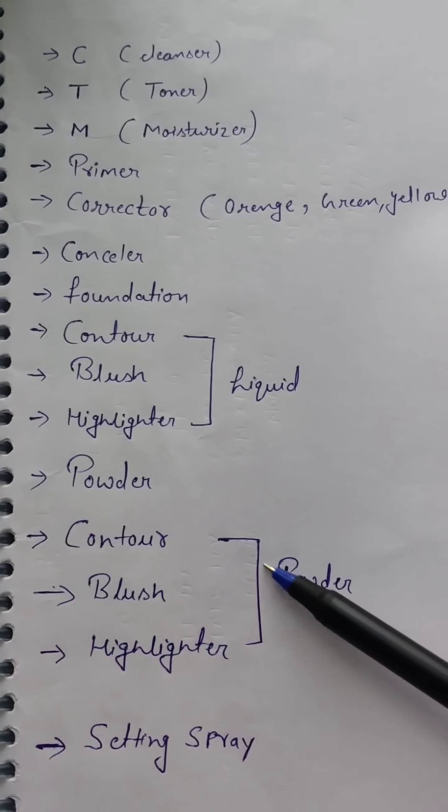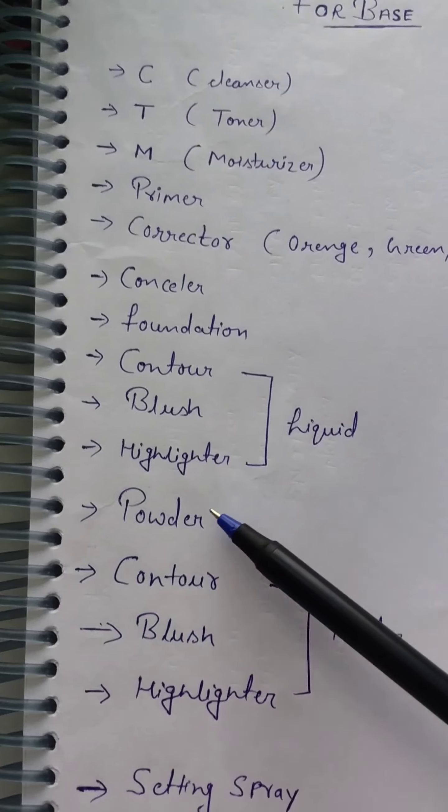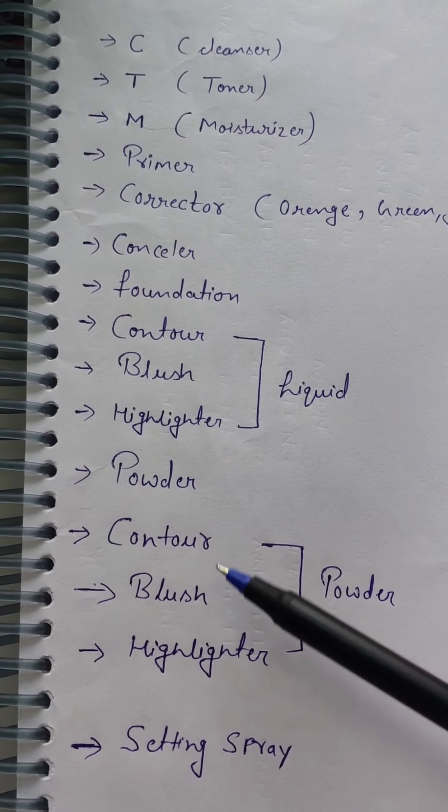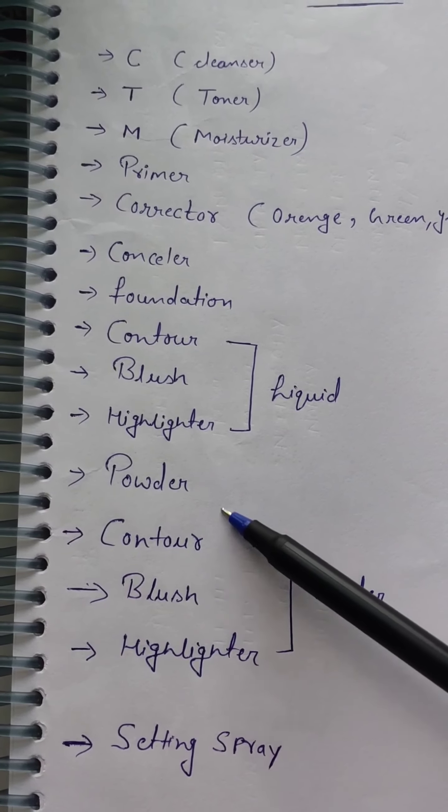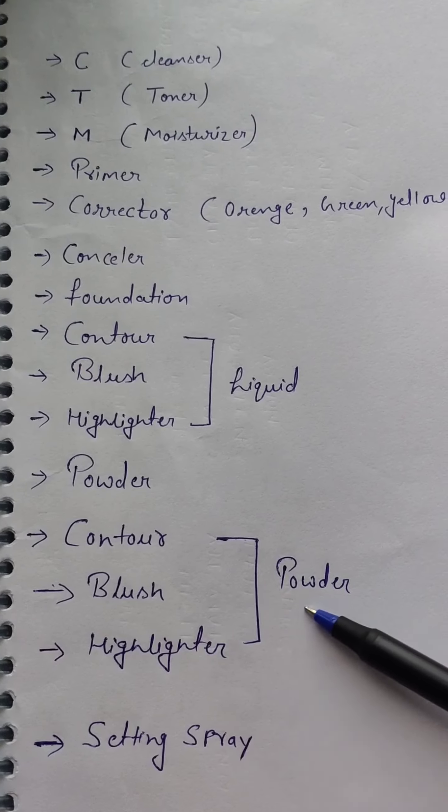You use powder contour, powder blusher, and highlighter. If you do makeup for more time, like I told you, for 10 to 12 hours bridal makeup, then you have to follow these steps. After powder locking, you have to do these three steps.